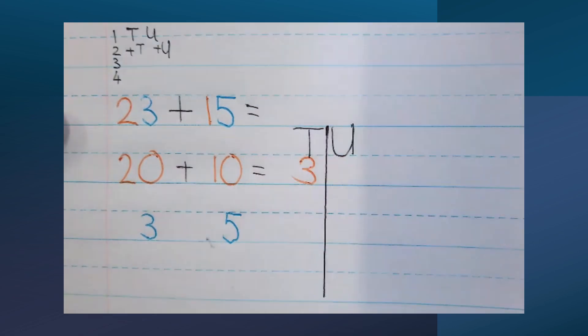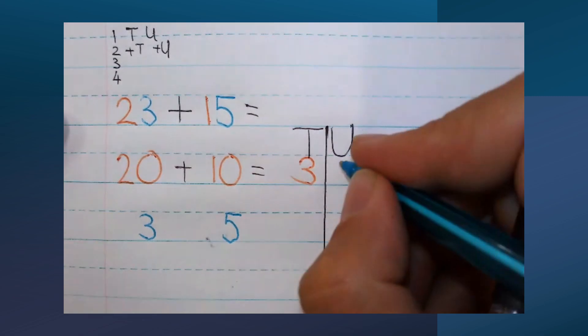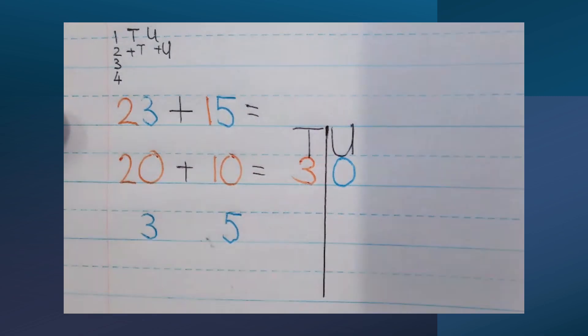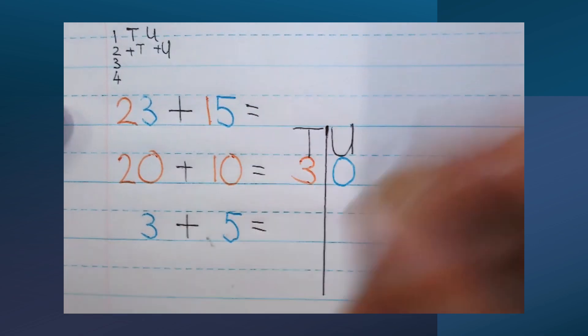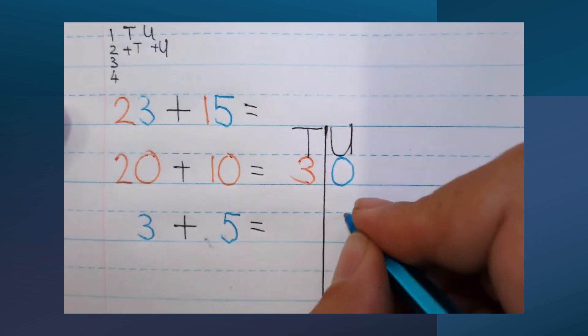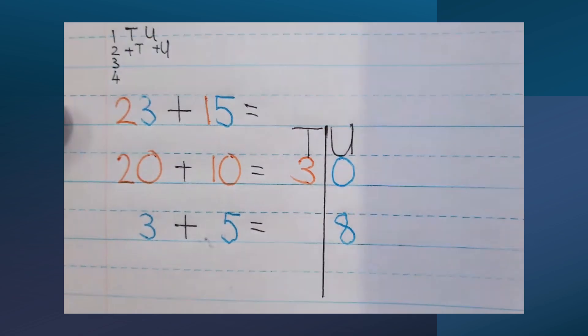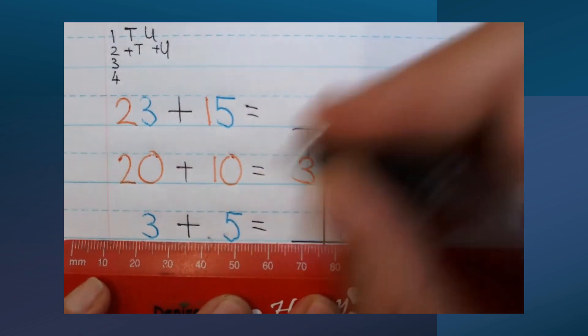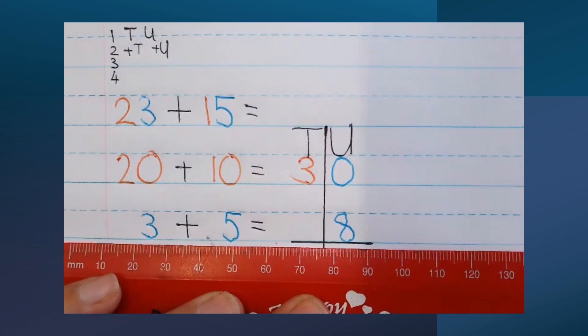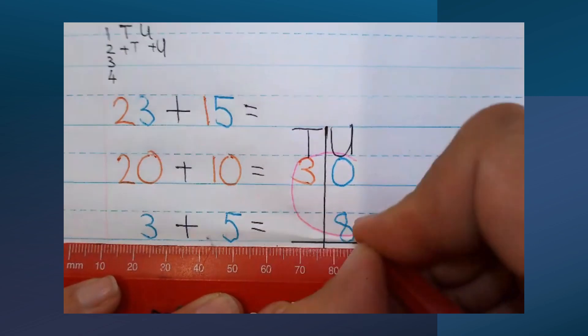Next, 3 plus 5, that equals to 8. That goes with the units. Now my next step is to add, to put together my tens and units over there, and my answer.